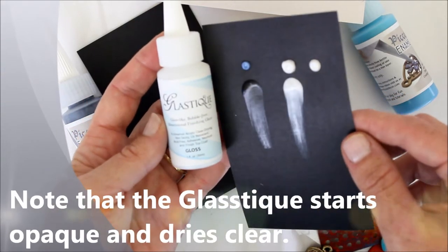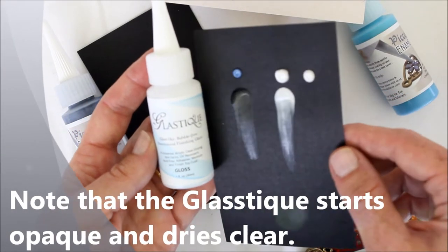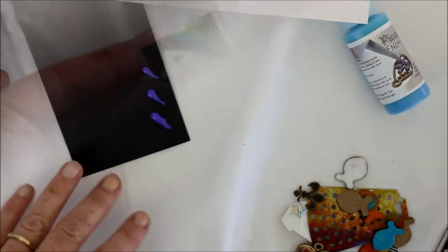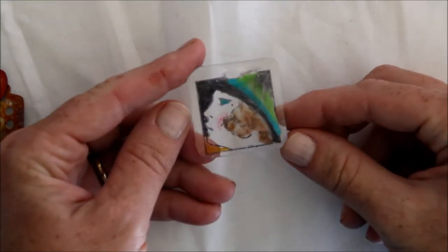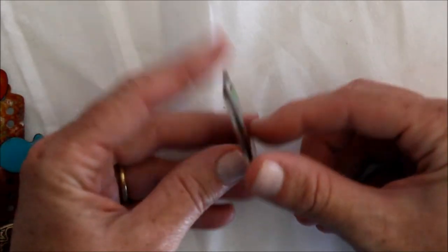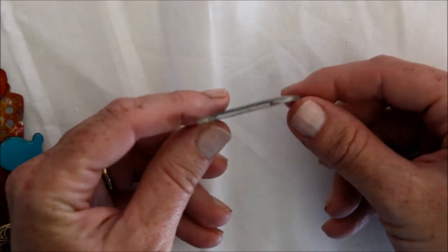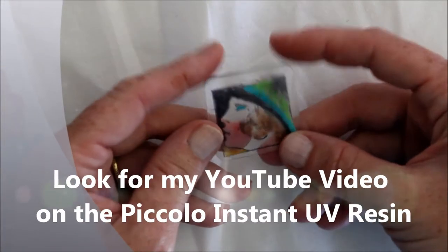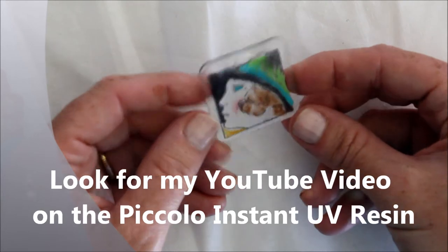This is the one called Glass-tique, so it is kind of like a finishing glaze or a top coat. It is completely clear. Let me show you some of the things that I tried out. The first thing I'm going to show you is actually a piece that I did as part of a different review with the UV curing resin.